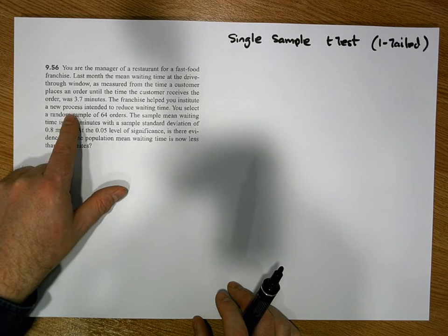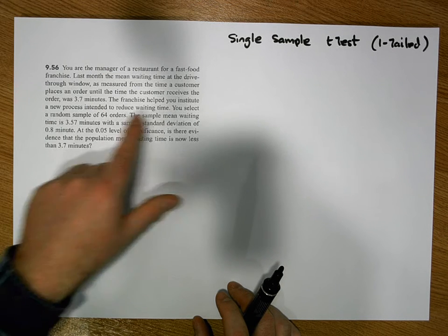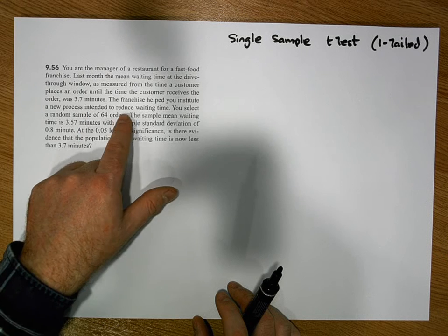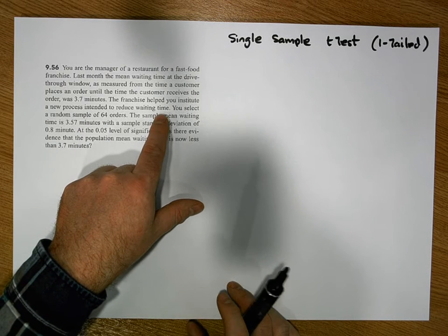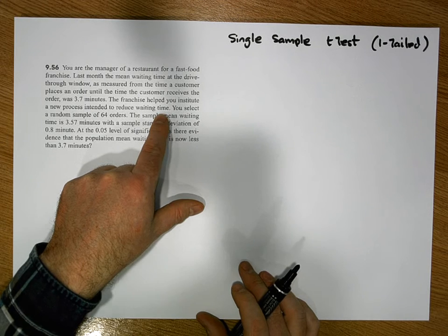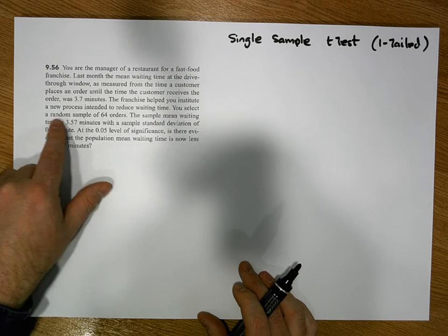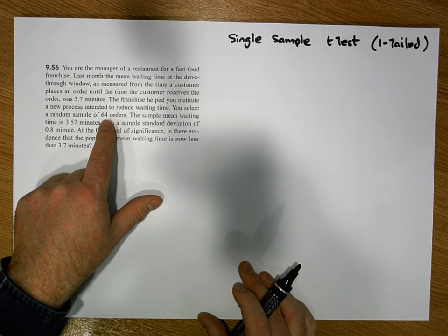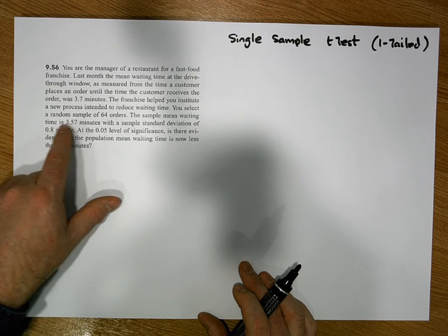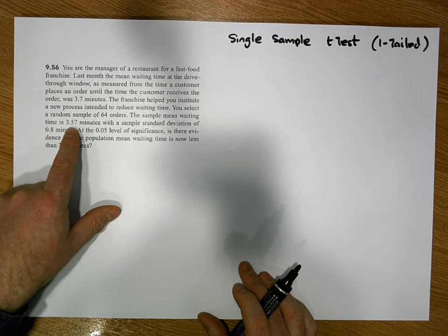The franchise helped you, as the manager, institute a new process intended to reduce waiting times, and you want to determine whether waiting time has changed. You select a random sample of 64 orders and find that the sample mean waiting time was 3.57 minutes.